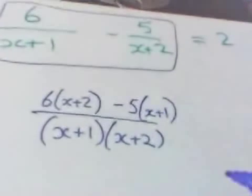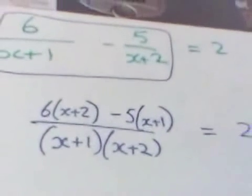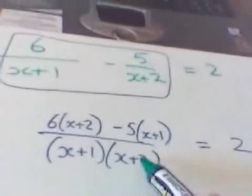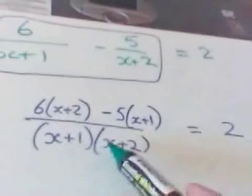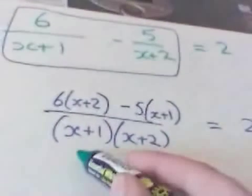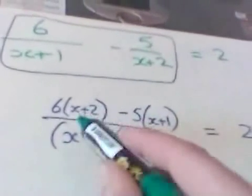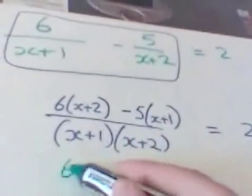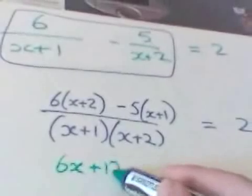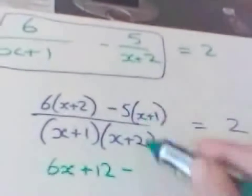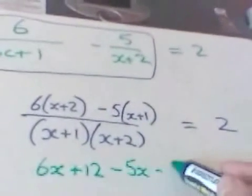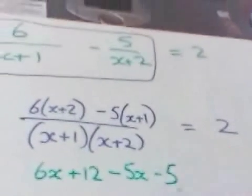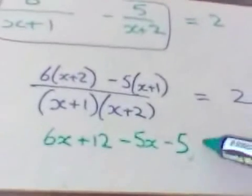Now that all equals 2. What I can do now is clear the denominator by multiplying both sides by (x+1)(x+2). At the same time we're going to simplify the top. The top simplifies to give 6x+12 minus 5x-5.